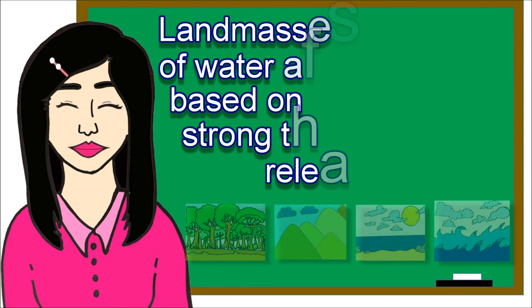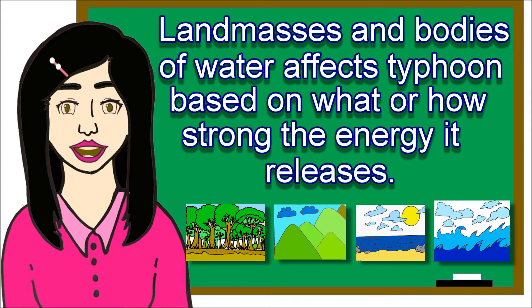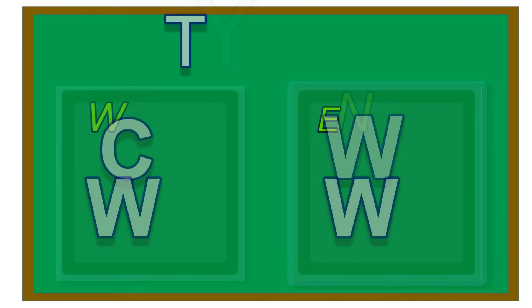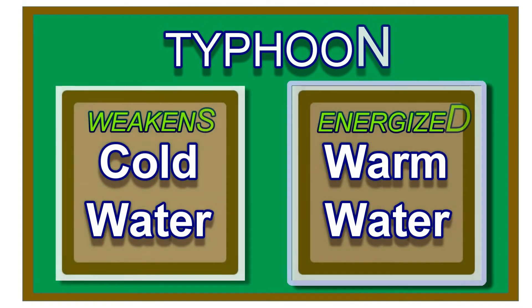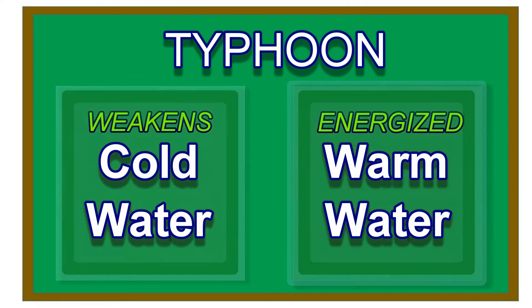Land masses and bodies of water affect typhoons based on how strong the energy they release. Typhoons gain energy from warm water and lose energy over cold water, and interaction with land will weaken a typhoon.